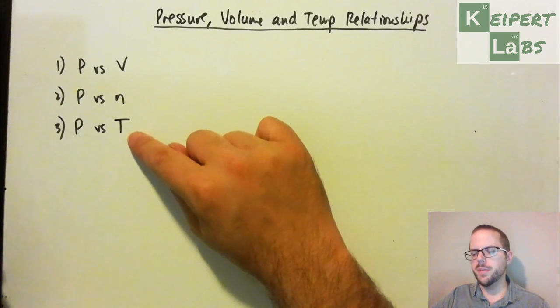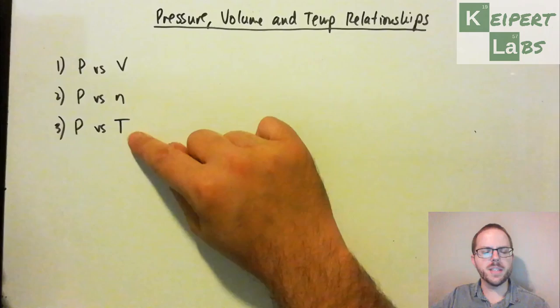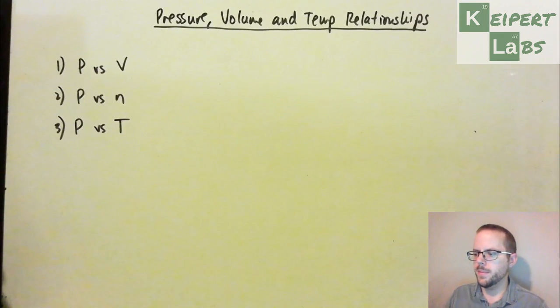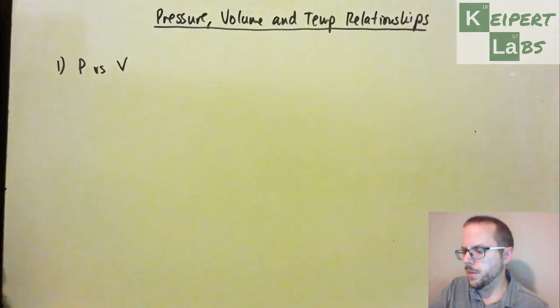By now you would have done the activity where you've taken some second-hand data and produced a graph. So here's what we're going to actually dig into and analyze that a little further. So let's start with the first one, pressure versus volume.